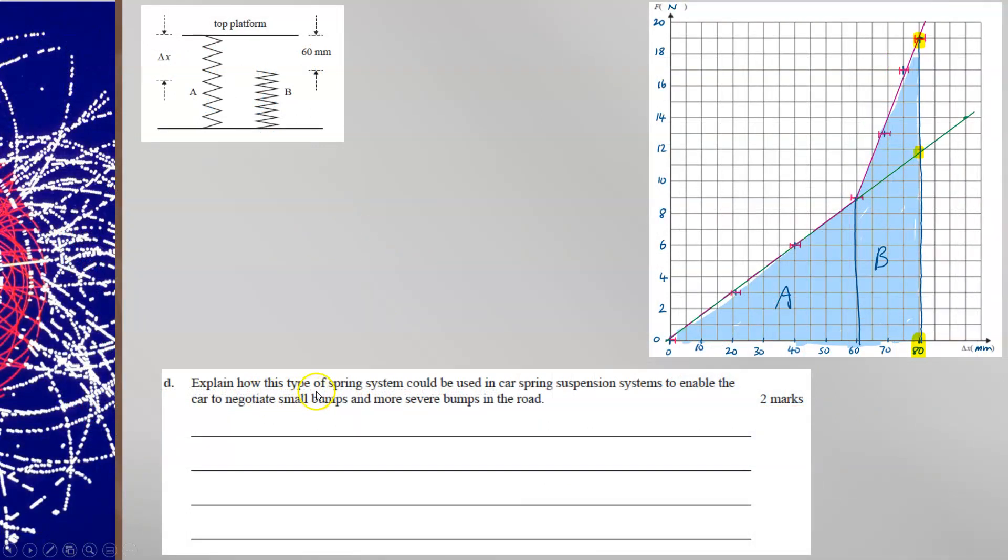And then the final question explained how this type of spring system could be used in a car spring suspension systems to enable the car to negotiate small bumps and more severe bumps in the road. The answer wasn't overly complicated but still people found this hard.